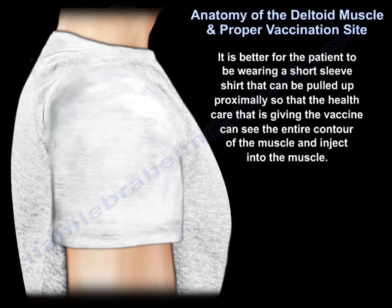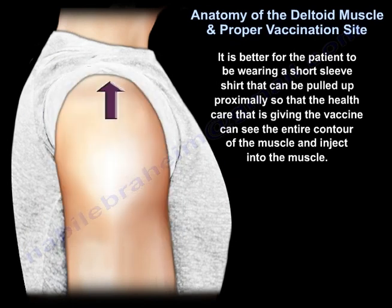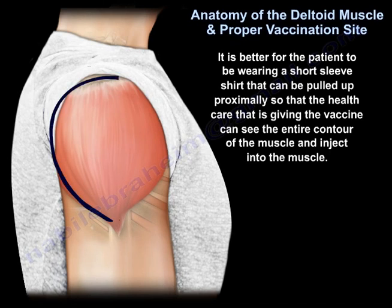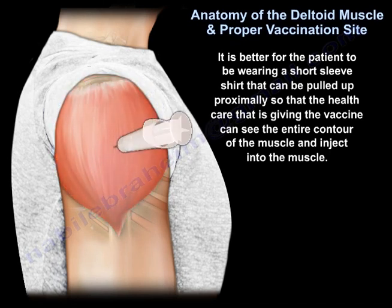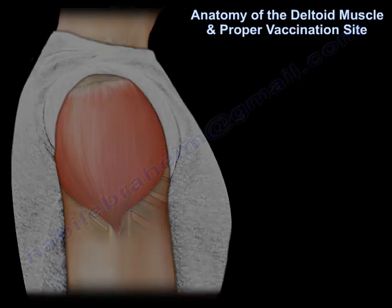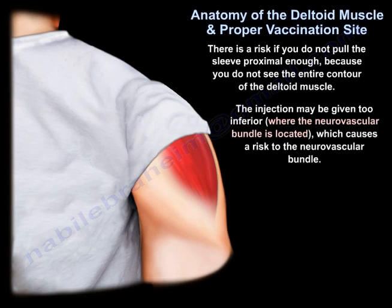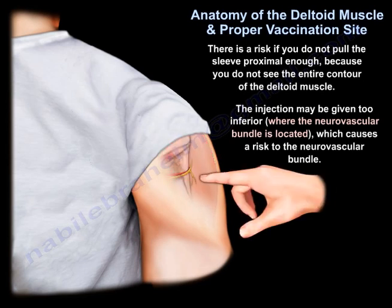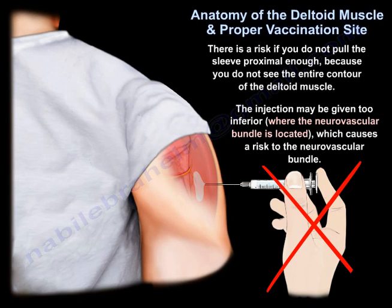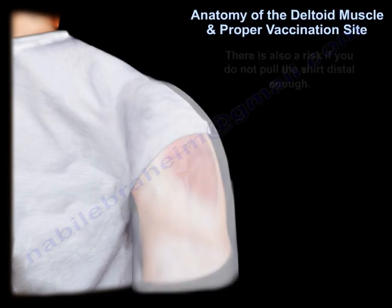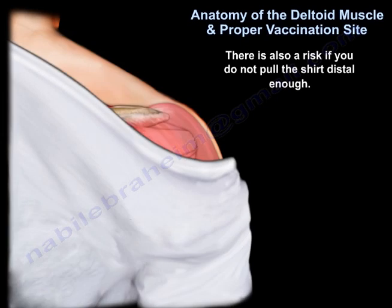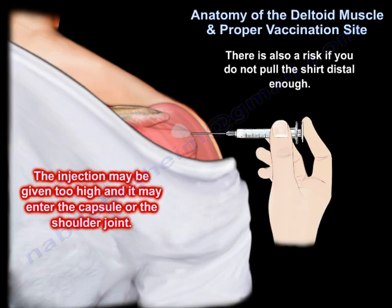It is better to have the patient wear a short sleeve shirt and pull it proximally so the healthcare provider can see the entire contour of the muscle and inject into it. There is a risk if you don't pull the sleeve proximally enough, as you won't see the entire contour and the injection may be given too inferiorly, where the neurovascular bundle is located. There is also a risk if the shirt is not pulled up enough that the injection may be given too high and enter the capsule or shoulder joint.